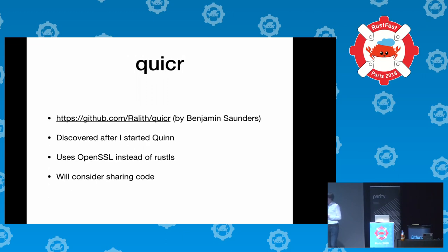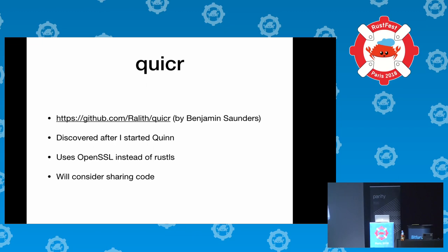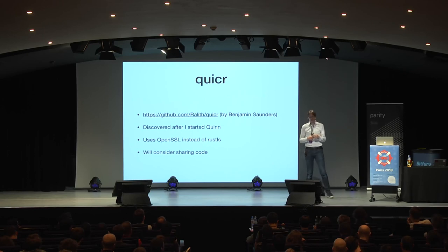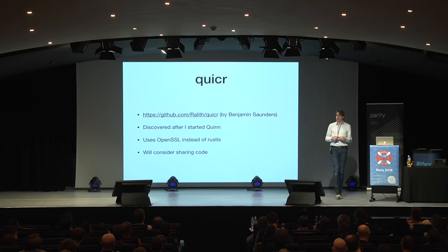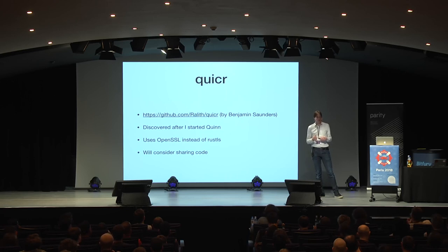There's one other Rust implementation by Benjamin Saunders. I hadn't found it when I started, or I may have reconsidered. He uses OpenSSL instead of Rustls, and I think he spends way more time hacking the OpenSSL bindings to support the extra stuff than I spent fixing Rustls. At some point I want to consider whether it makes sense to share more code. He has a networking-less core and a small Tokio layer on top, so it can also do Tokio. His implementation is currently more mature and handles more of the interoperability matrix.